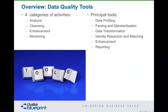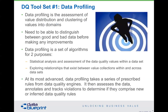The overall data quality tool set has four categories of activities: analysis of the data, cleansing of the data, enhancement of the data, and monitoring of the data. We'd like to have all four. The principal tools are profiling, parsing and standardization, transformation, identity resolution and matching, enhancement, and reporting. We'll spend a little time working through each of these.